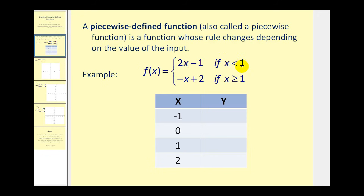If x is less than one we use the first function rule, and if x is greater than or equal to one we use the second rule. To complete the table: when x equals negative one, negative one is less than one, so we replace x with negative one — two times negative one minus one equals negative three. When x is zero, zero is still less than one, so we use this rule again: two times zero minus one equals negative one.